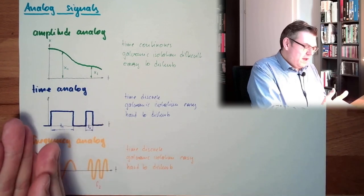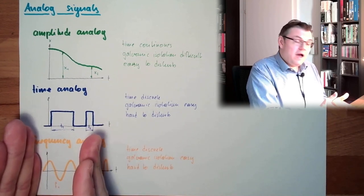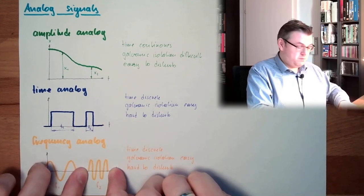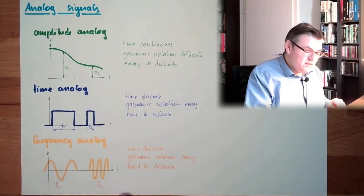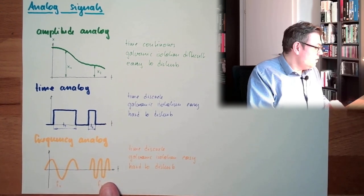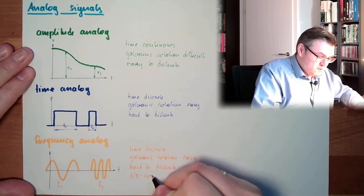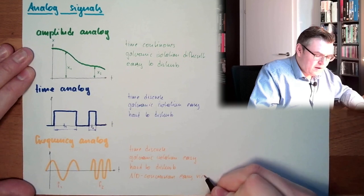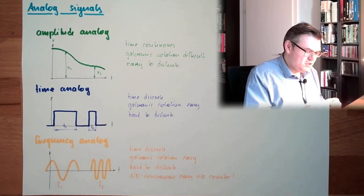Here, how to digitize this? I measure a certain time, and count how many times in this measurement time, fixed measurement time, I'm passing zero. And if I'm passing a lot of zeros, then the frequency must be high. If I'm passing not that much zeros, the frequency must be low. So I just need to count. A simple counter for a certain time is enough here. So this analog conversion is easy via counter. Just a counter. This is a cheap and easy product.